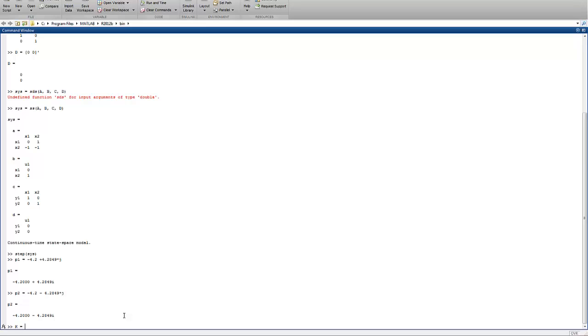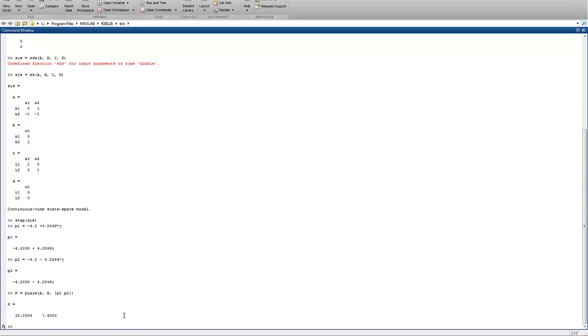Then we can find K using the place command, passing A, B, and in a vector, P1 and P2. There's our gain K that we need. We can check this by defining a closed loop system state space object using A minus B times K, B, C, and D.